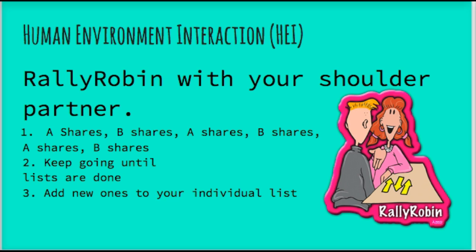Hold on to that paper because it's going to go in your notebook. You are now going to do a rally robin with your shoulder partner. A rally robin is two people — notice how they're listening to each other, turned, making eye contact, squared up. One person shares one answer, then the next person shares one answer, going back and forth until the whole list is done. Start with the positive, go through those, then go to the negative. If your partner says something not on your list, write it down because you need a full chart by the end.